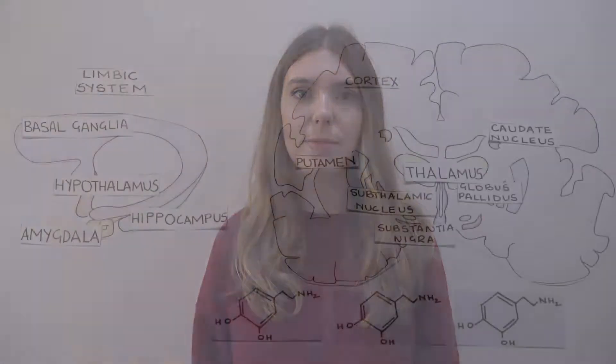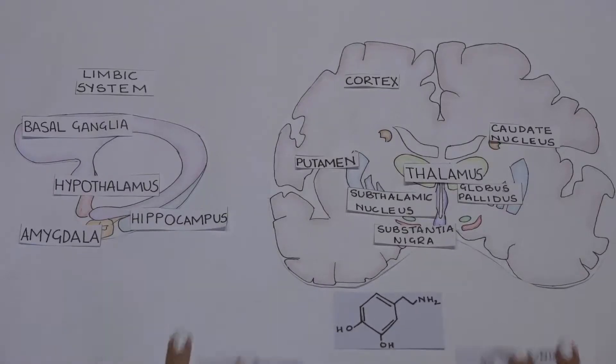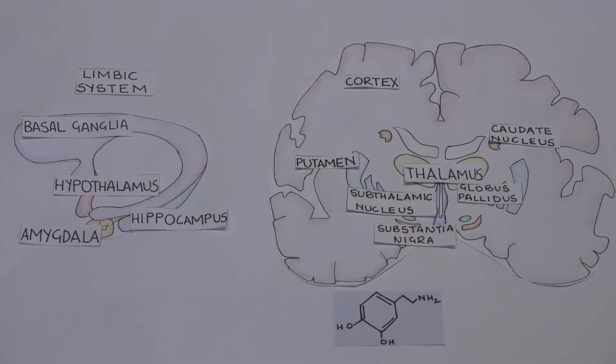The basal ganglia controls movement. Therefore, if there are problems with the basal ganglia, it can lead to neurodegenerative diseases. An example is Parkinson's disease. Parkinson's disease is caused by loss of nerve cells in the substantia nigra. These nerve cells are responsible for producing dopamine, so there is a loss of dopamine in this area. The substantia nigra cannot function normally, which causes slow and abnormal movements.